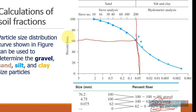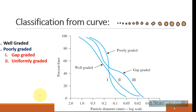From the particle size distribution curve you can determine the percentage of each soil type — gravel, sand, silt, and clay — present in a particular sample. This is very handy when classifying soil into different groups. The next use is the determination of gradation.